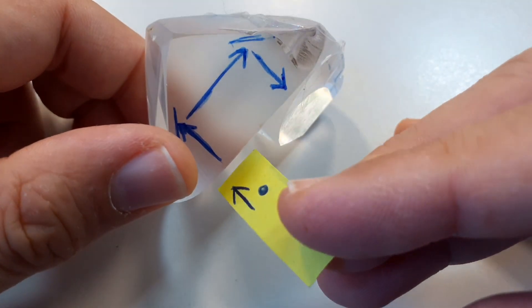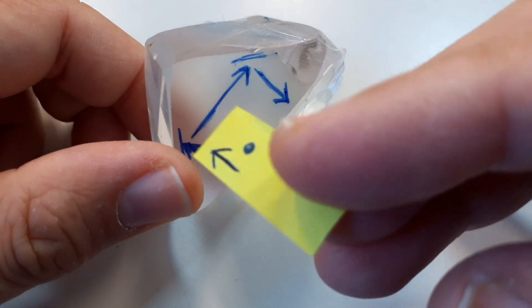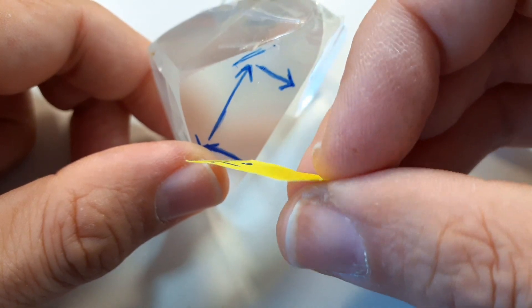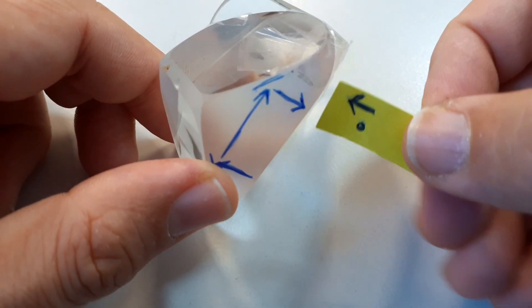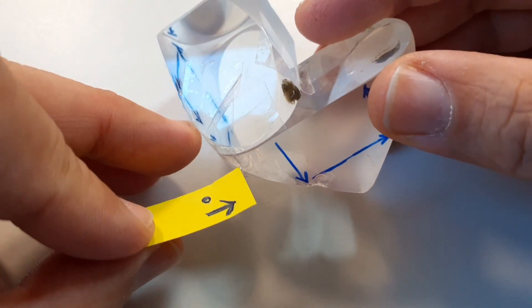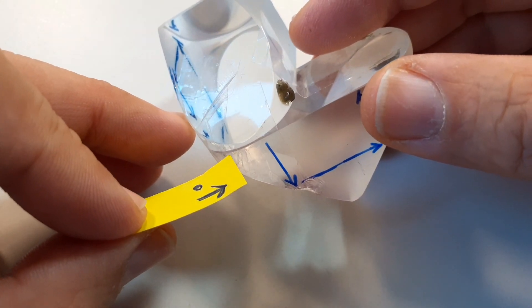So it enters with the arrow pointing upward and the dot on the right. And it's reflected by the first surface like this. And it's reflected again. And now you can see as it exits this first prism, the dot is now on the left side.